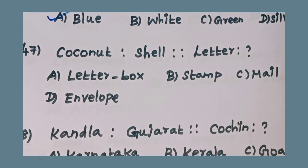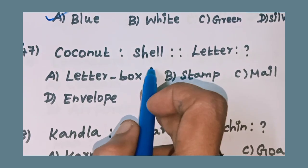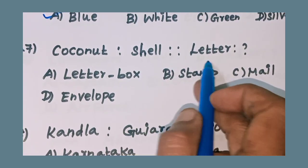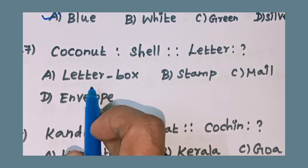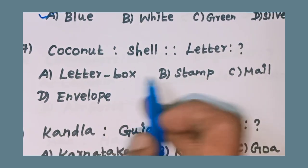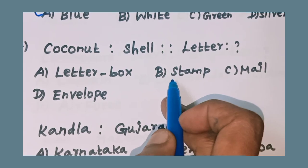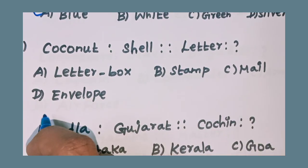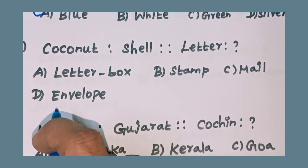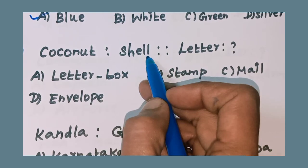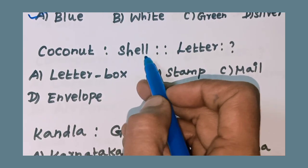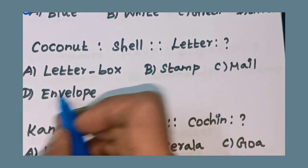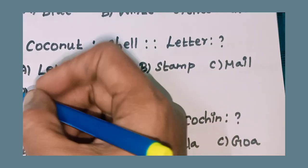47th question: Coconut is to Shell as Letter is to question mark. Option A: letterbox, Option B: stamp, Option C: mail, Option D: envelope. Coconut is related to shell and letter is related to Option D: envelope.